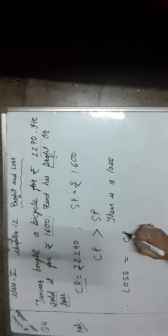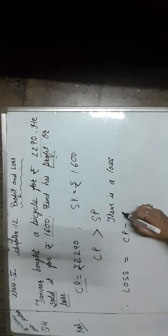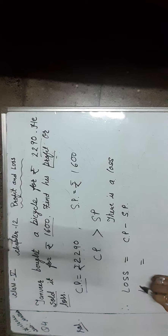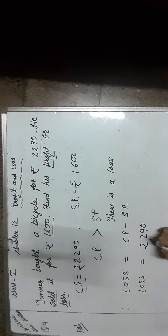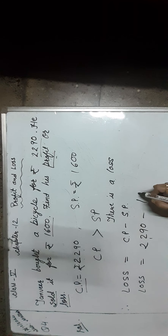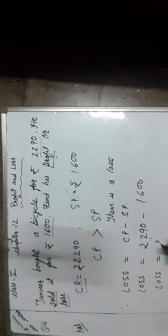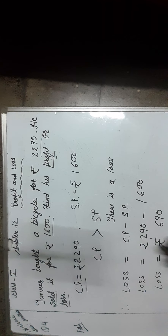Therefore, loss is equal to cost price minus selling price. What is the cost price of the bicycle? Yes, Rs. 2,290. What is the selling price of the bicycle? It is Rs. 1,600. So loss is equal to Rs. 690.